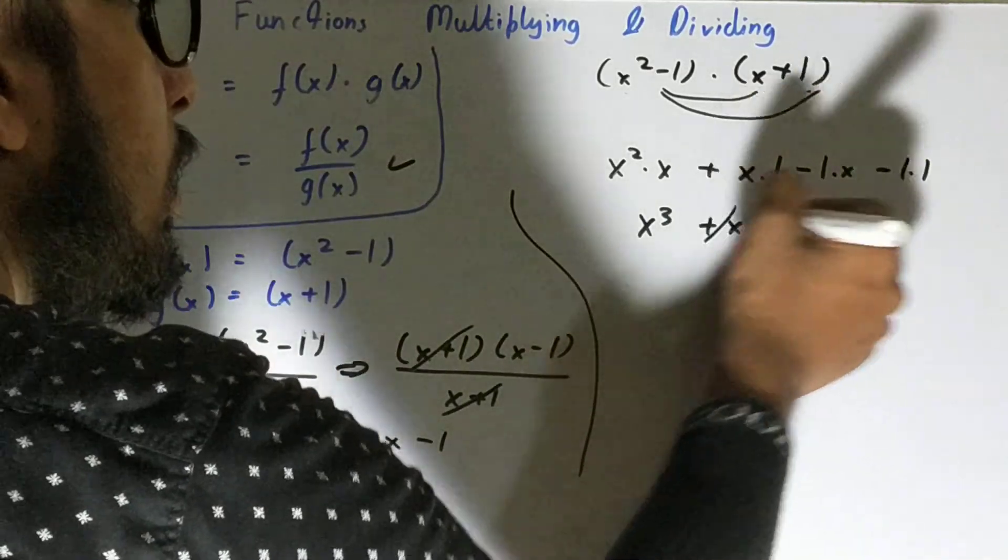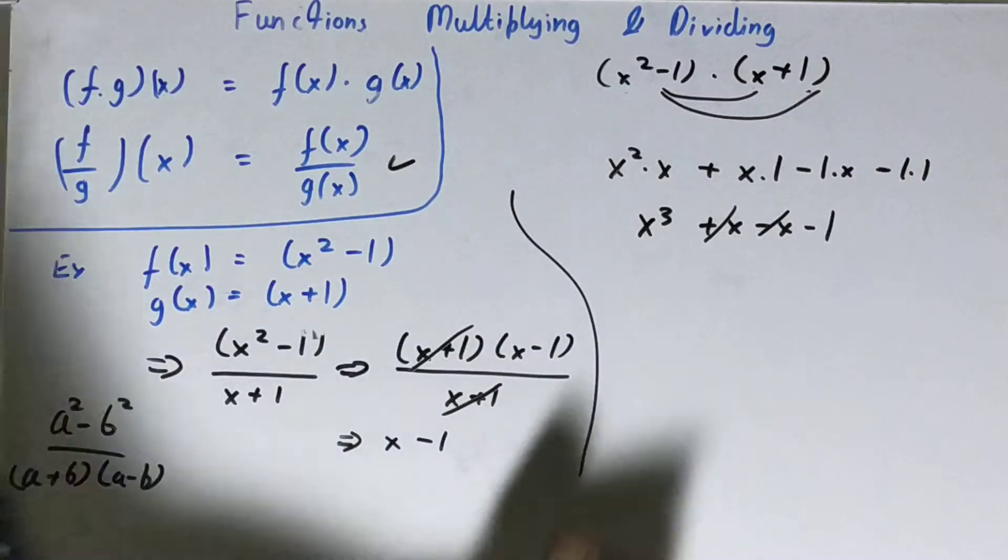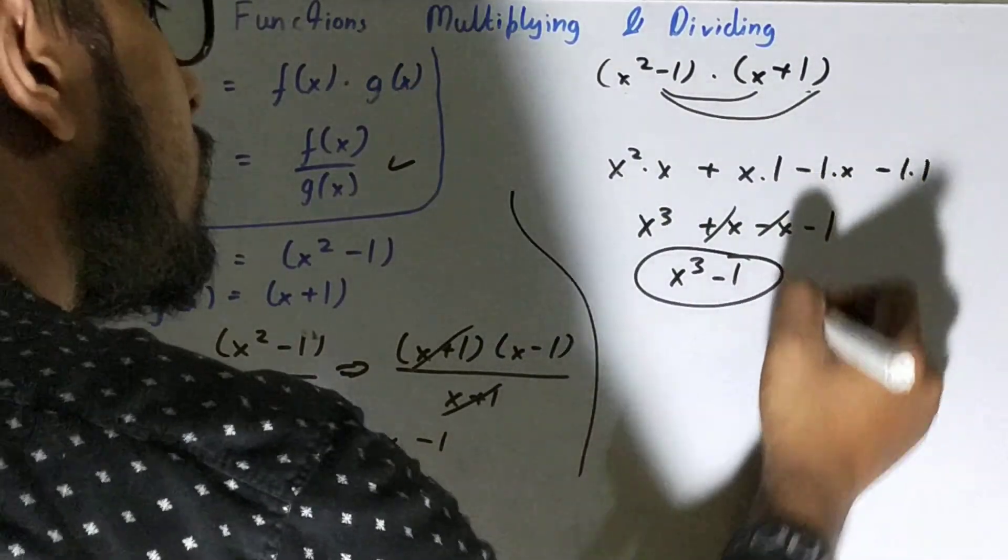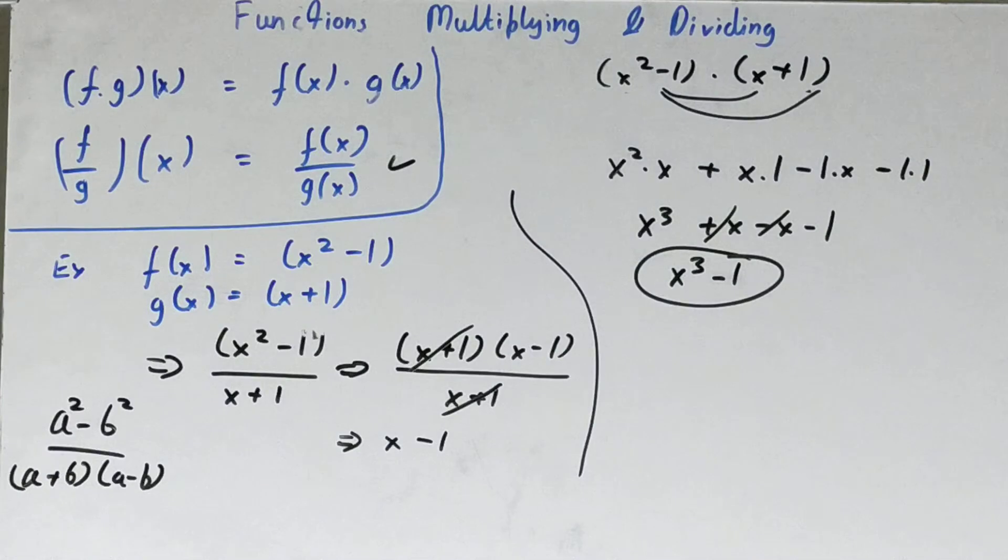If you see this nicely, this x and this x will cancel out, and you'll be left with x cube minus one as your final answer. Right, so this is how you can divide and multiply with functions.